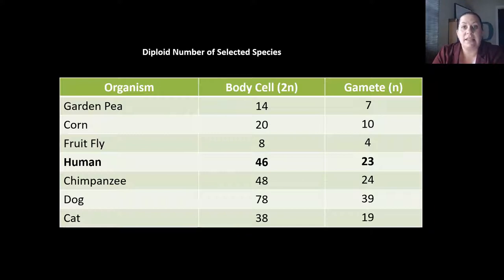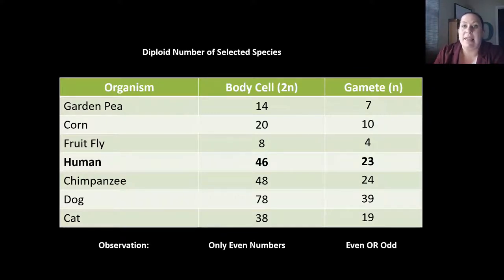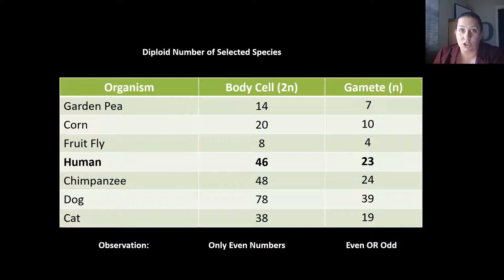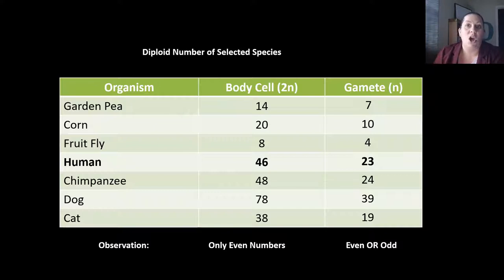So we look at body cells versus gametes. An observation here: all of the body cells are going to be even — we have to be able to divide them by two. You can't have half a chromosome, so body cells only have even numbers. However, the gametes can be odd or even; it doesn't matter because you're going to multiply by two to get back to the 2N number.